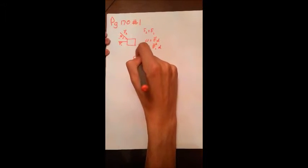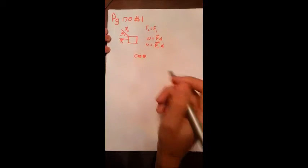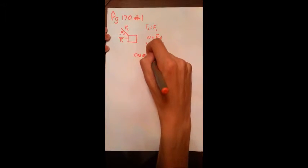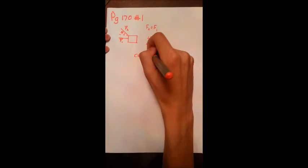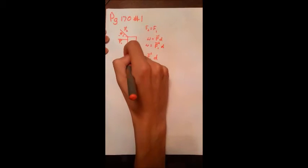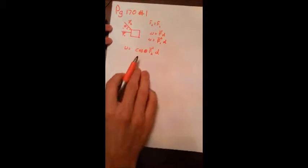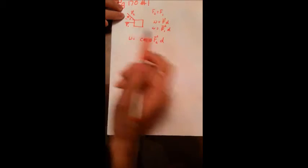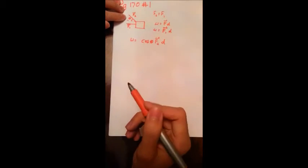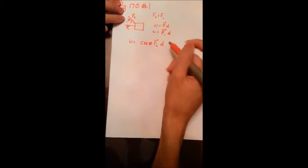We use cosine theta times force times distance, and that equals the work done by force 2. Now, we know that the horizontal component of F2 is going to be less than the actual magnitude.